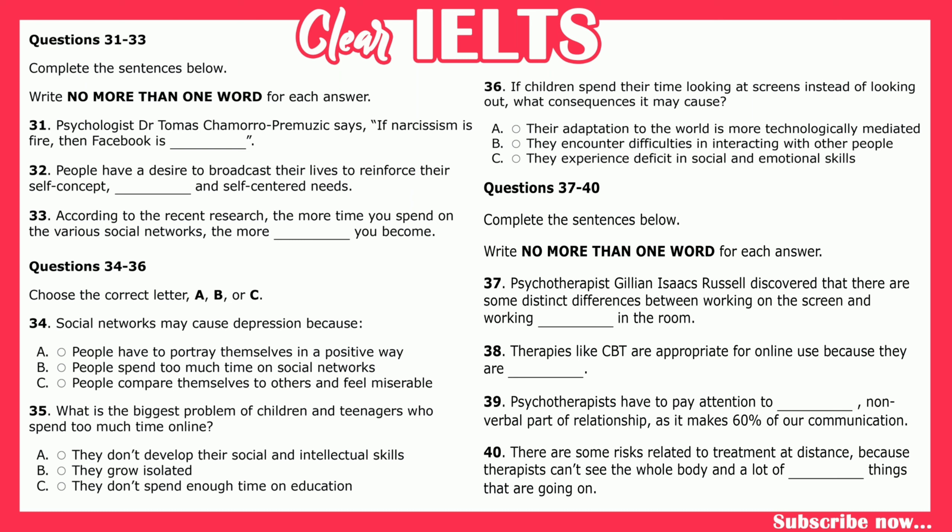One could argue that if adaptation to the world will be even more technologically mediated for them, it's okay. It would only be a problem if you put them on a farm or forced them to live in an Amish community. The average five-year-old today is better equipped to interact with much of the industrialised world than a 60 or 70-year-old, because they can pick up any gadget and they know how it works. So the main deficit is around social and emotional skills.